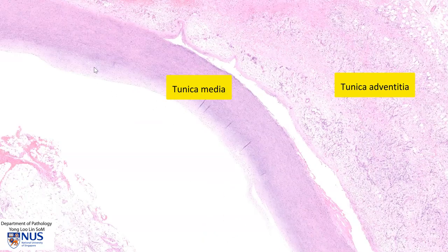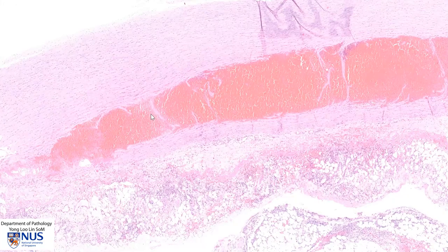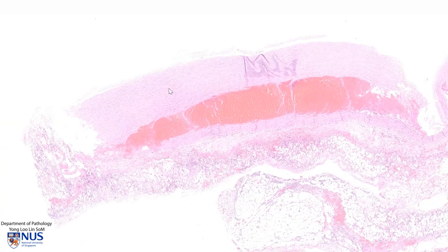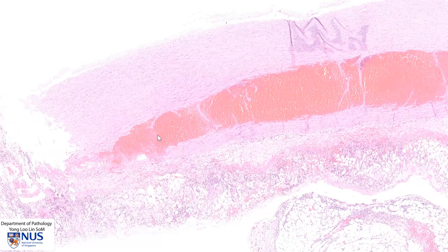Here is another example, but in this instance, the aorta is orientated in the opposite direction. So we can see tunica intima, tunica media, and adventitia. And here is the dissection — we can see this hematoma tracking within the tunica media and splitting apart the tunica media.